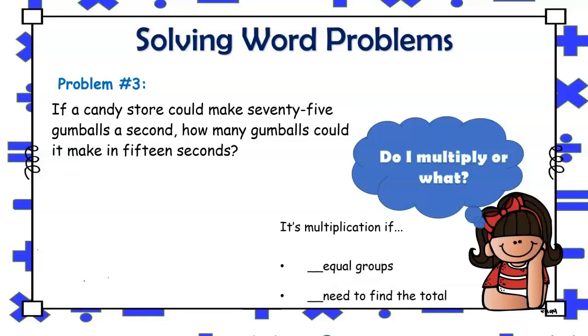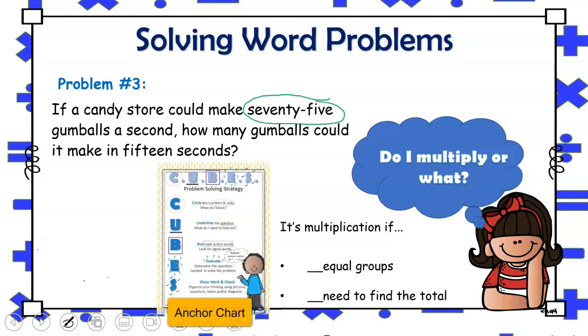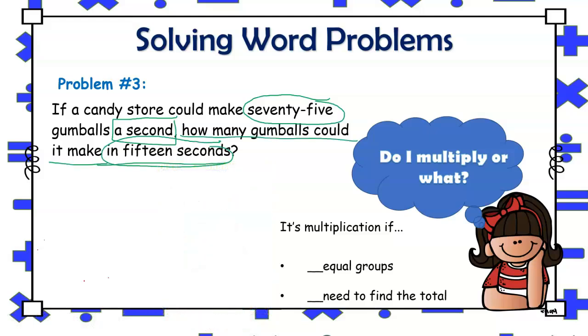If a candy store could sell 75 gumballs a second, how many gumballs could it make in 15 seconds? Utilizing the cube strategy, I will circle any important numbers, make sure to box any signal words, and be sure to underline the question, recognizing that that's the focus of solving the word problem. As a side note, you may want to encourage students to substitute the written form of the number into its standard form, which will lessen the chance for errors when it comes to calculating.